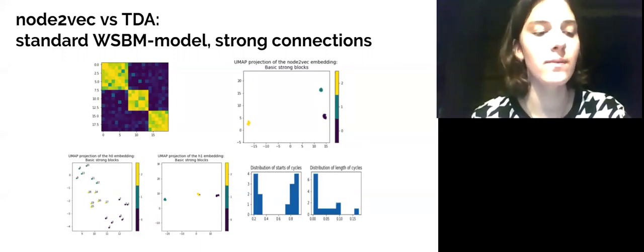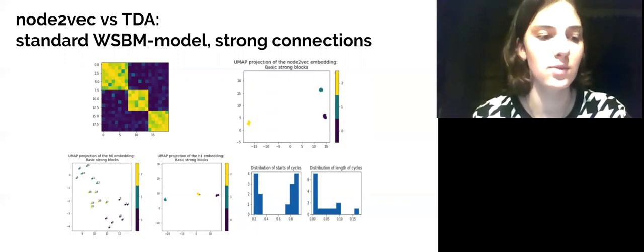As it can be seen on the figures, for both embeddings a three-cluster block structure can be revealed successfully. However, for TDA embedding there is one wrongly attributed node. The reasons of this mistake can be understood from the cycle's representative analysis.